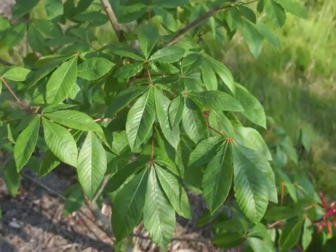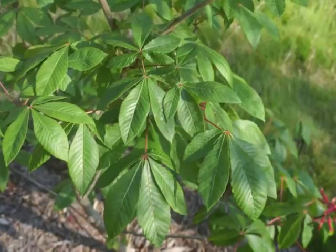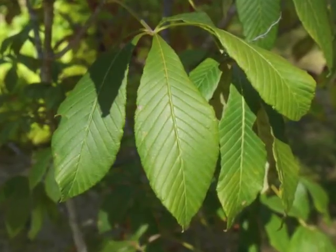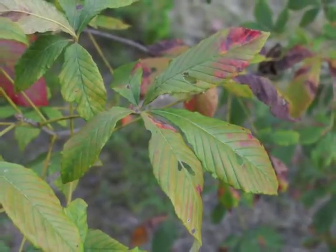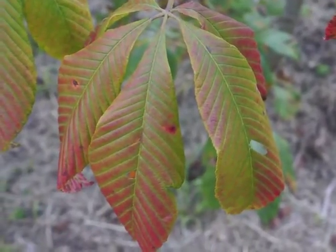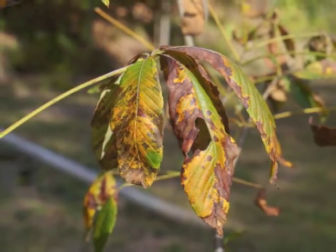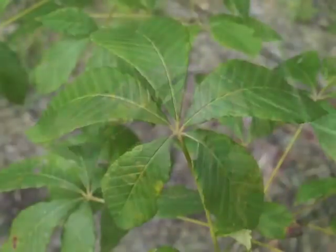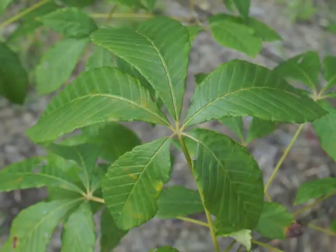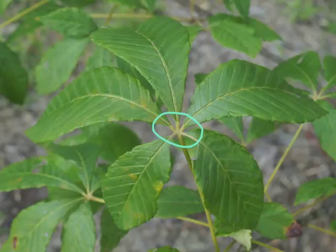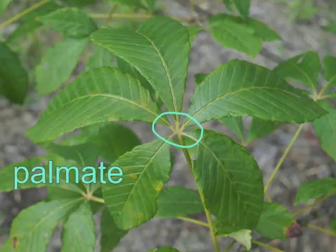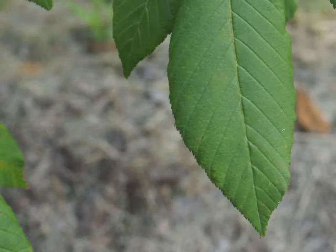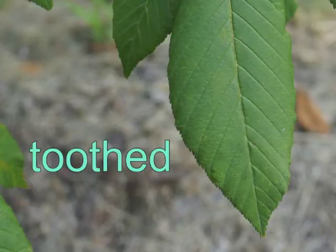New leaves tend to droop, and the leaflet edges curl under. The late summer leaves are flatter and a stronger green color. By late summer, the Red Buckeye leaves turn red, or yellow, and/or brown. Each compound leaf has five leaflets, all originating from the same point — this is described as a palmate leaf. Two of the leaflets are usually smaller than the others. Each leaflet has a slightly toothed, or serrate, margin.